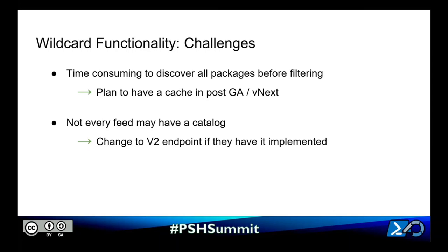While we were able to add this new functionality, we still ran into a few challenges. Firstly, if the repository store is large, retrieving all packages is slightly time consuming. Since the API returns an IReadOnlyList, the entire read operation happens at once, so we're not able to stream and provide progress updates to improve the user experience. One solution we have in mind is implementing a local cache, which we plan to do by our vNext milestone. Secondly, not every package source feed may have a catalog resource, as it is optional. So when a user wishes to find a package with a wildcard name from a v3 endpoint that doesn't implement the catalog resource, our solution is to modify the v3 endpoint to its v2 alternative endpoint and perform the search that way.